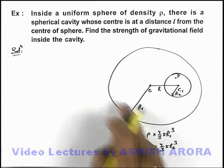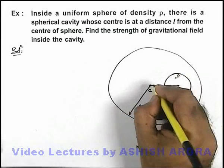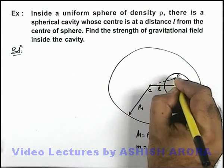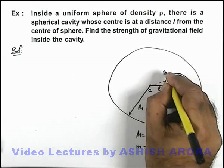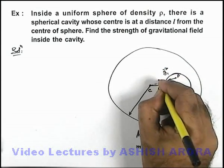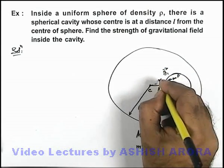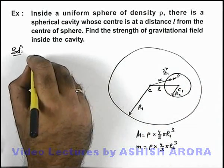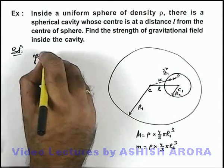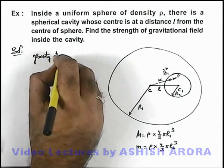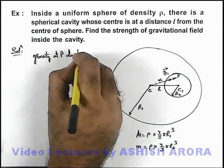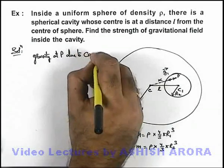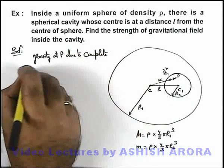Now in this situation if due to the whole sphere gravitational field at point P is g₁, then we can say g₁ will act in this direction. Say if the position vector of point P with respect to the centre of sphere is x, then we can simply write gravity at P due to complete sphere.